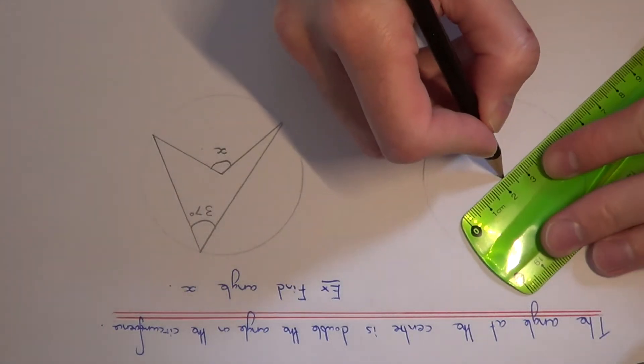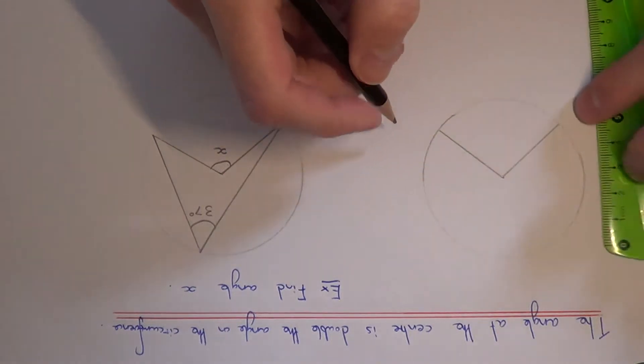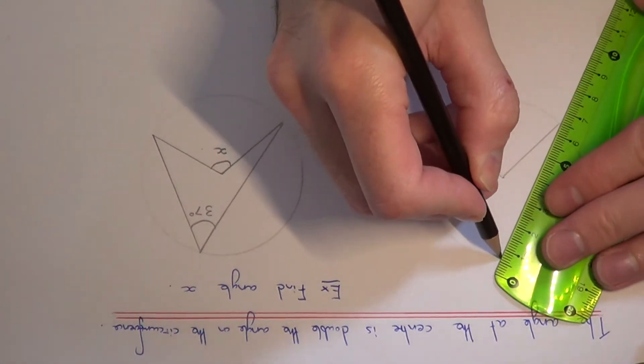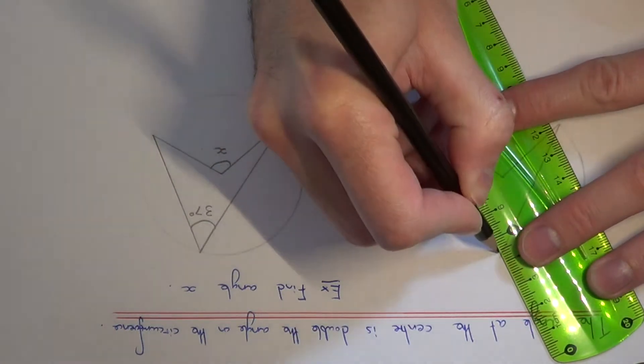What we have then is if you make an angle at the centre of the circle, and we make an angle on the outside of the circle, on the circumference,